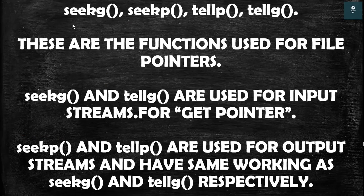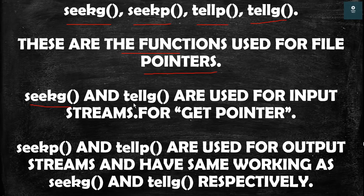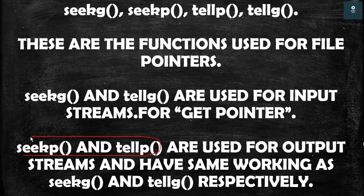We have four functions to work with these pointers: seekg, seekp, tellp, and tellg. seekg and tellg — the 'g' stands for get — are for input streams, that is for the get pointer. seekp and tellp — the 'p' stands for put — are for output streams, that is for the put pointer. seekp and tellp have the same functionality as seekg and tellg; the only difference is which pointer they operate on.